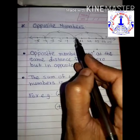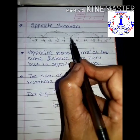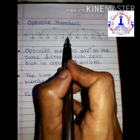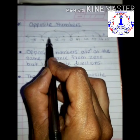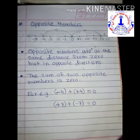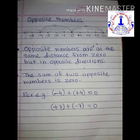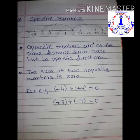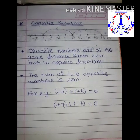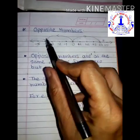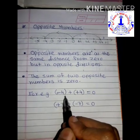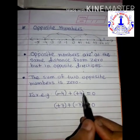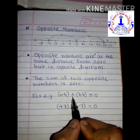If I take plus 4 and minus 3, the distance from 0 to plus 4 is 4 units and the distance from 0 to minus 3 is 3 units — the distances are not the same, so they are not called opposite numbers. Also, the sum of two opposite numbers is 0. For example, minus 4 plus plus 4 equals 0, because minus 4 and plus 4 are opposite numbers.